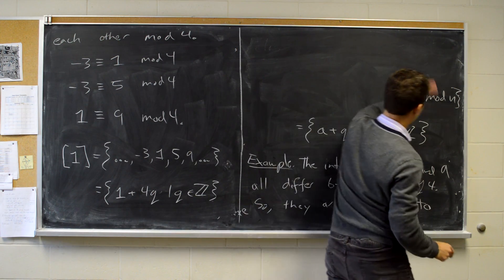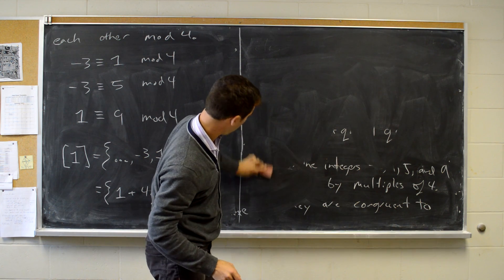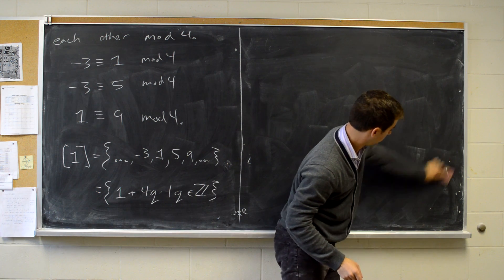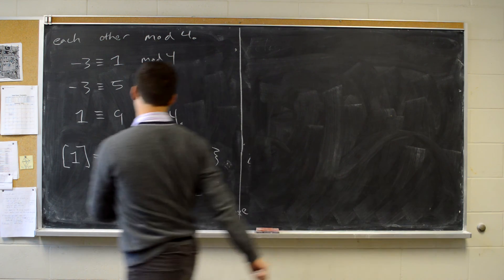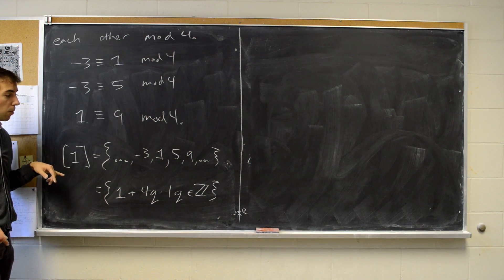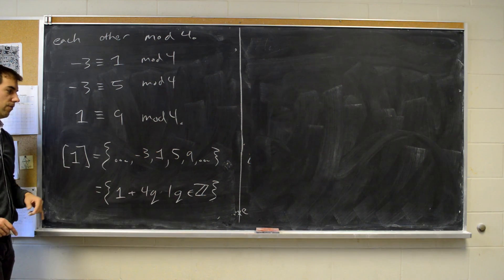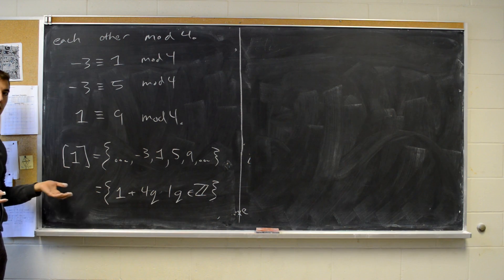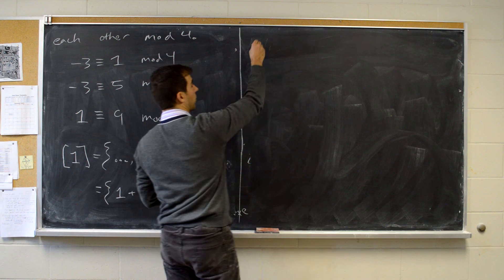Something I've discussed in passing is how to find representatives for each equivalence class. A congruence class goes by many names — the congruence class of 1 is also the congruence class of −3 and of 5. But there's a nice unique label we can give to each congruence class mod n, and our next theorem is going to tell us how to do that.